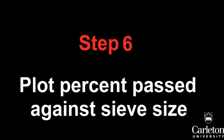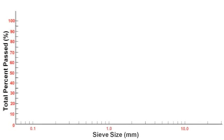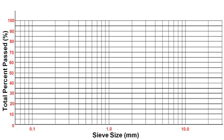Plot the percent passing each sieve versus the sieve size. This graph will use a semi-log scale. The y-axis will be a linear scale of the total cumulative percent passed from 0% to 100%. The x-axis is sieve size in millimeters, on a logarithmic scale from the smallest sieve size corresponding to the number 200 sieve, or 0.075 millimeters, to the largest sieve size, which was three-quarter inch, or 19 millimeters. Each sieve will correspond to one data point on this graph. Plot all the data points and connect them together like this.